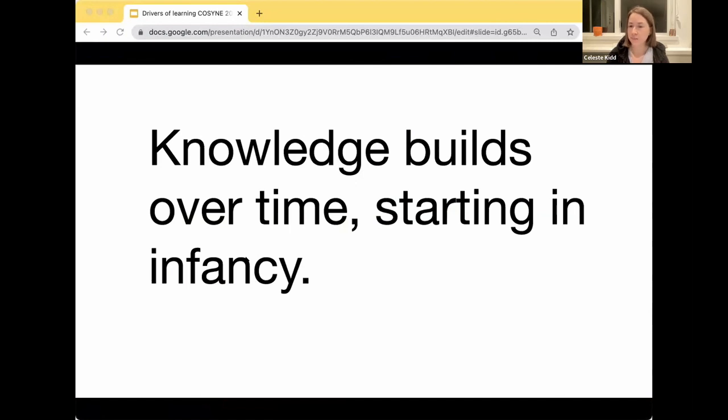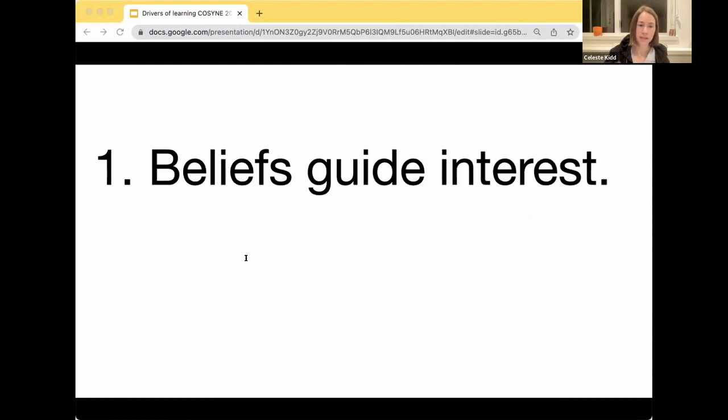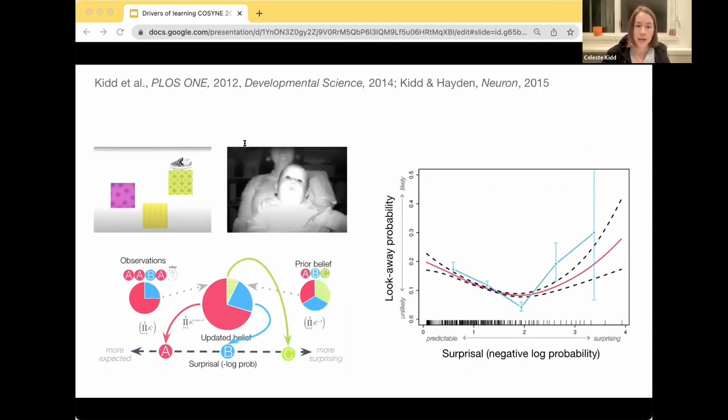So first thing, number one: beliefs guide interest. People's probabilistic beliefs are very directly guiding their sampling and changing their interests over time as they accumulate beliefs and make subsequent decisions about where to sample. One example of this comes from a series of studies we've run with human infants, in which we showed that infants continuously generate probabilistic expectations about events in the world and allocate their attention to preferentially engage material that's neither overly predictable, too redundant with what they were expecting, nor overly surprising, which could be an indication that it's beyond what you're capable of learning right now. One example of this, again, are these studies with infants where we show that they're allocating their attention to preferentially engage events, in particular, of intermediate surprisal according to a reasonable idealized model of their probabilistic expectations.